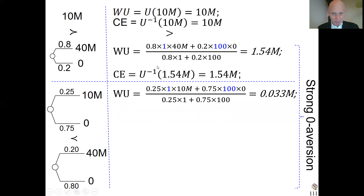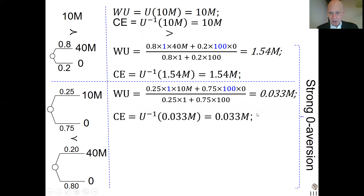Now we go to the lower prospects. The weighted utility — again you see the formula, and again the f function comes in. There's a lot of weight for the zero outcome. That's why we get a certainty equivalent of only 0.033 million. This is 10 million at a quarter probability, so it's just a small certainty equivalent because of the strong zero aversion.